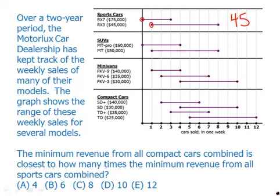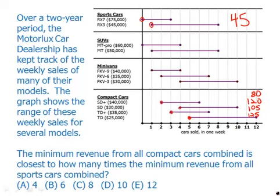Now the compact cars — looking at the leftmost points. The SD+, which costs $40,000, they sell at least two of those: $80,000. The SD, which costs $30,000, they sell three: $120,000. The TD+, costs $35,000, they sell three: three times $35,000 is $105,000. And the TD, the regular TD, costs $25,000 — their cheapest car — they always sell at least five: $125,000. The SD+ and SD add up to $200,000. $105,000 and $125,000 add up to $230,000. Add those together and we get $430,000 total minimum revenue from compact cars.